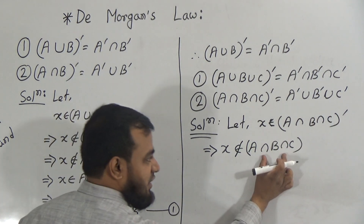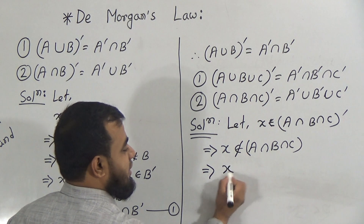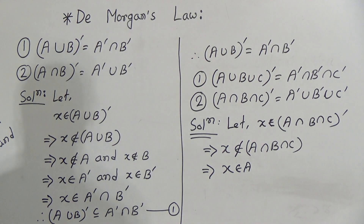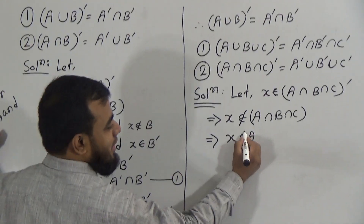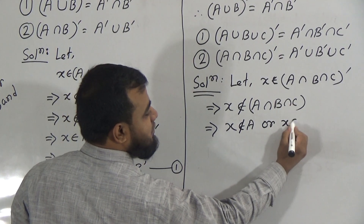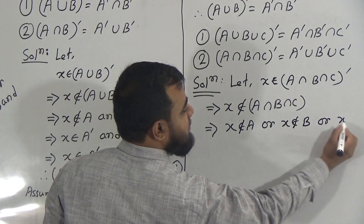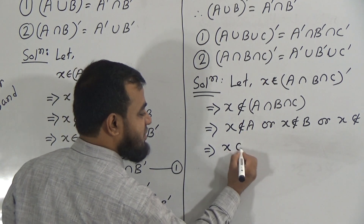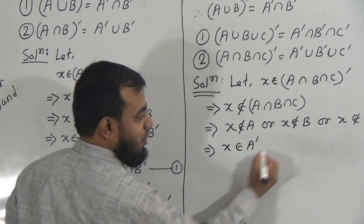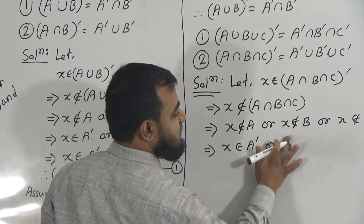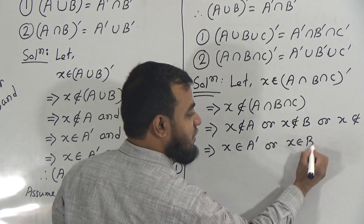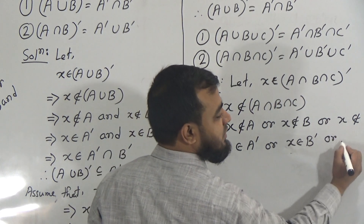So we can write: x doesn't belong to A — in place of intersection we use 'and' as usual, but we use 'or' because of this negative sign — or x doesn't belong to B, or x doesn't belong to C. Now, x doesn't belong to A means x must belong to A prime, x doesn't belong to B means x must belong to B prime, or x must belong to C prime.